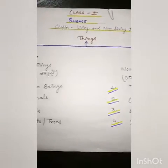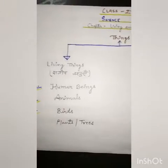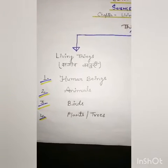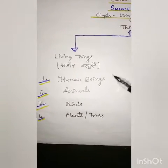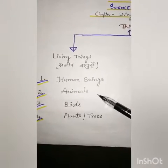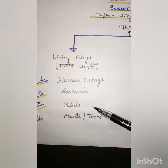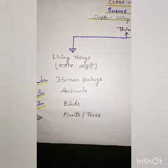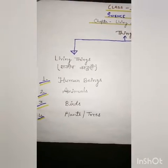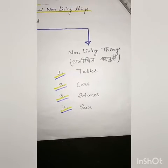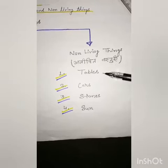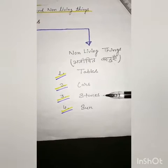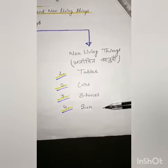One more time — living things, yani sajiv vastu, such as human beings, animals, birds, plants and trees. Non-living things such as tables, cars, stones, and sun.